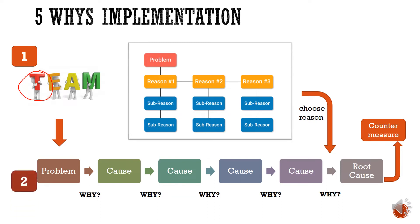The second step is to observe the problem in action, discuss it with the team, and write a clear problem statement. If it is a large problem, we need to break it into sub-problems to help simplify the analysis. Then we choose the most likely reason based on the team's technical analysis.